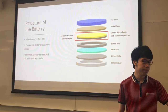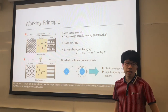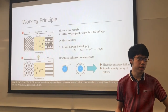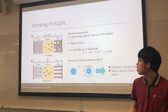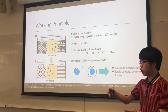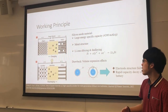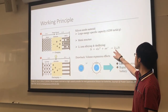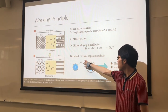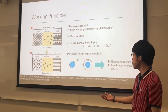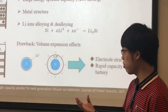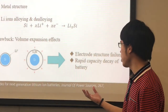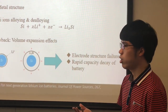Silicon-based electrodes have a common metal structure and operate via a process called annealing. As shown here, lithium ions combine or separate with silicon to generate electron transmission. However, the lithium silicate formed has a drawback called the volume expansion effect, which expands the material volume by around 400%. This destroys the electrode structure and rapidly reduces the battery lifetime.